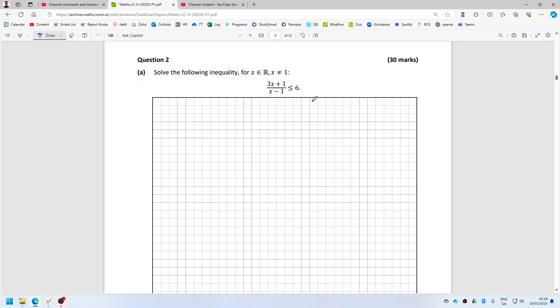Okay, solve this inequality. The way we do that is we multiply both sides by x minus 1 squared. So by doing that on the left we'll get 3x plus 1 times x minus 1 and on the right